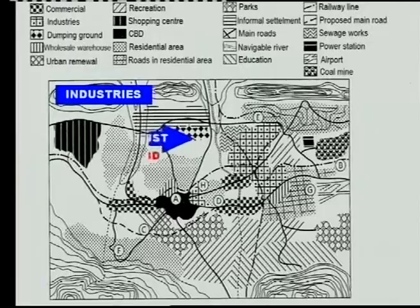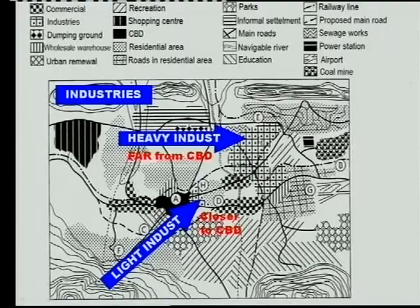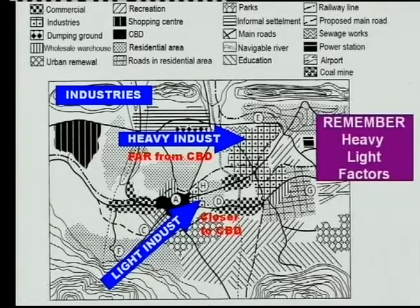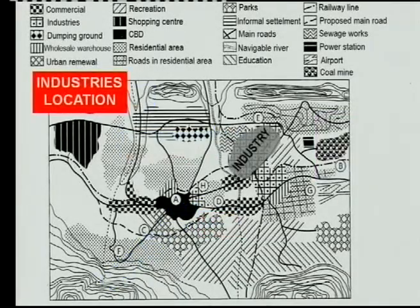Then the industries. We've got two types of industries — heavy and light industries. Now, what's very important is that every heavy industry is far from the CBD. See the light industries are closer to the CBD — very important that you should know that. So you must remember your heavy and light industries and the factors. Let's have a look at the factors — why did they choose this location for your industries? Why do we find them there? This is also a very popular exam question.